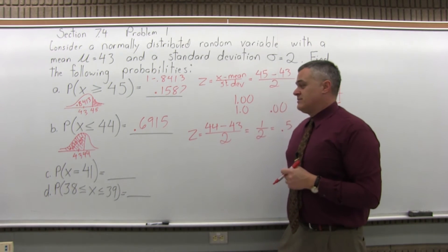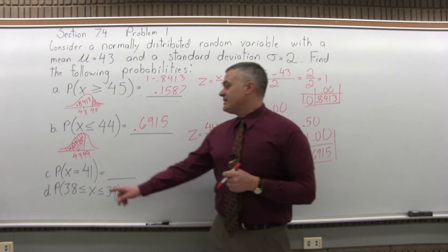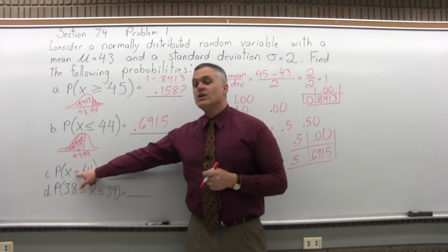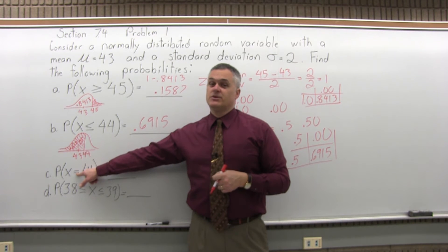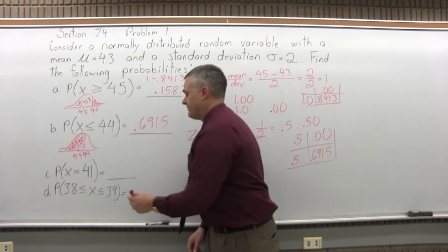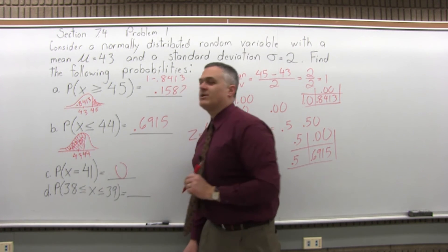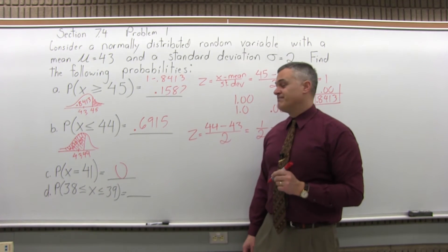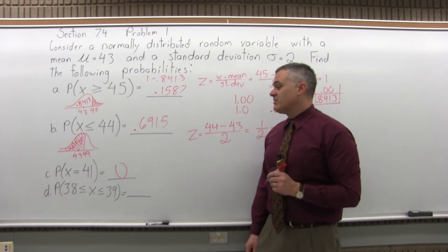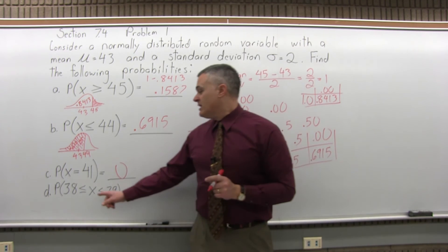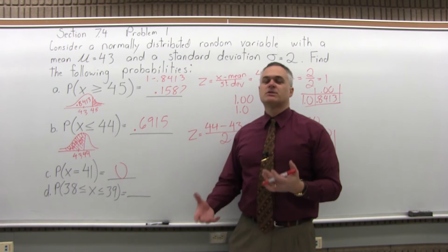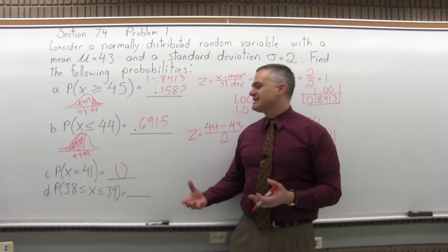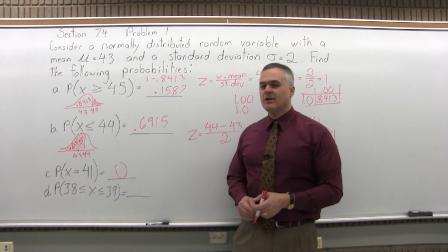For Part C, what's the probability that x equals 41? For a continuous normally distributed problem, the probability of an exact value is automatically 0 — no work needed. For Part D, what's the probability that 38 ≤ x ≤ 39? In other words, what's the probability that x is between 38 and 39?